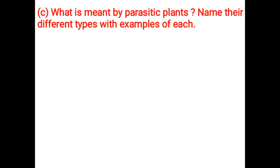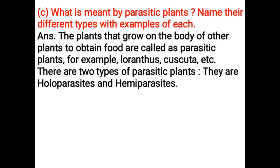What is meant by parasitic plants? Name their different types with examples of each. The plants that grow on the body of other plants to obtain food are called parasitic plants. For example, Loranthus, Cuscuta, etc. There are two types of parasitic plants: Olo-parasites and Hemiparasites.